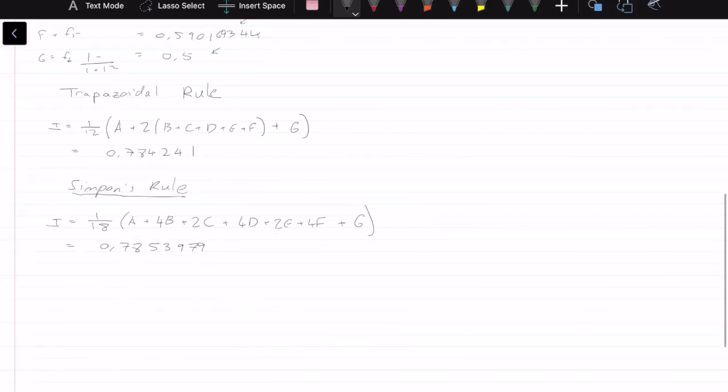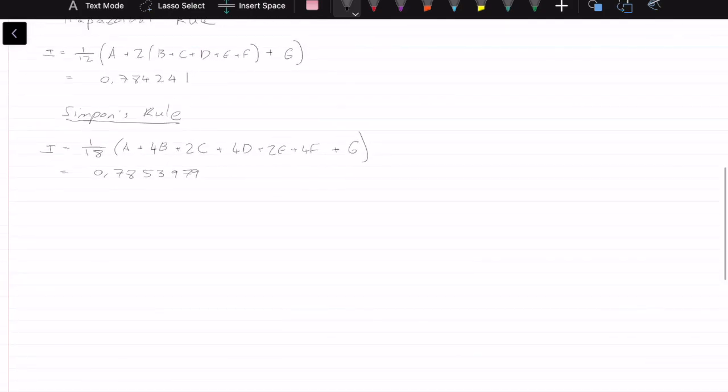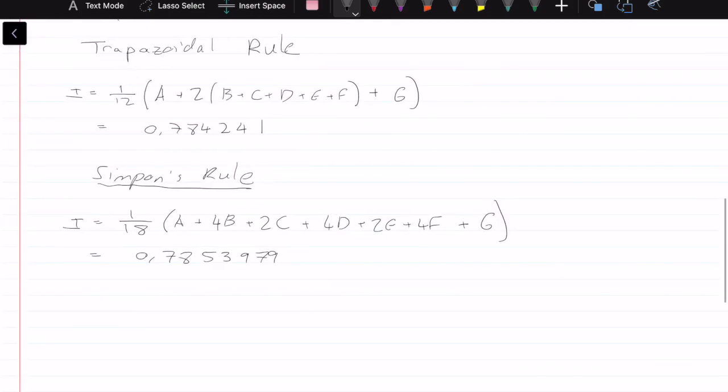If we wanted to actually carry out the integral, the real integral value, the actual is equal to the integral of 0 to 1, 1 over 1 plus x squared dx is equal to pi over 4, which has a value of 0.785398. Now let's compare our answers. With the Simpson's rule, we have about two decimal places before things start to look different.